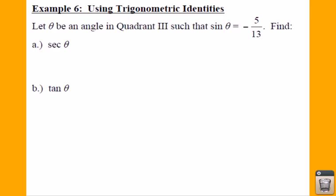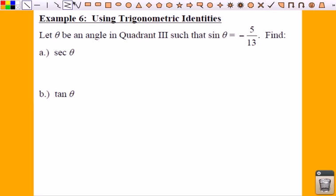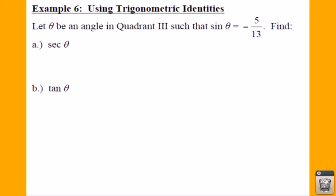If you're in Quadrant III, that means you have - here's your quadrants - so if you're in Quadrant III, what you're going to be able to do is you're going to be able to draw this triangle.